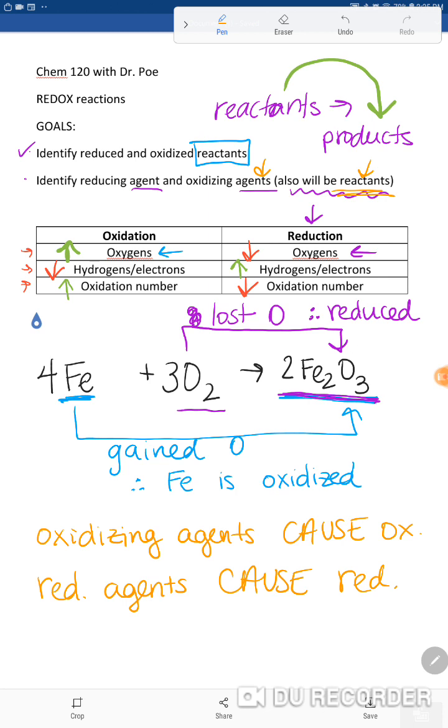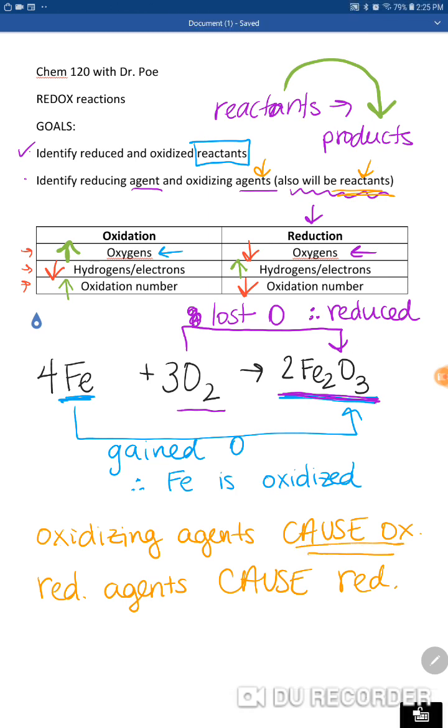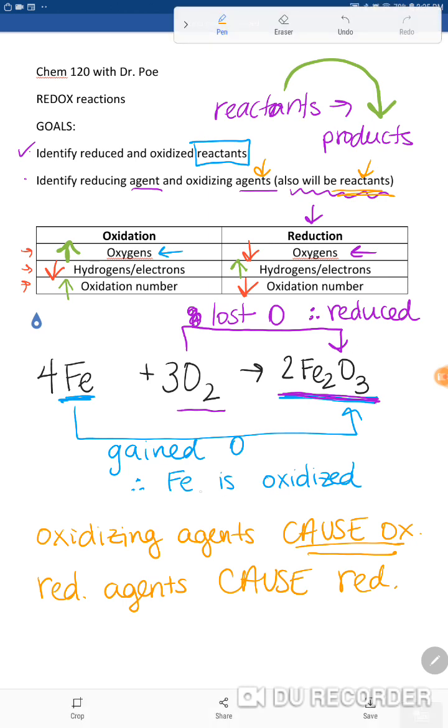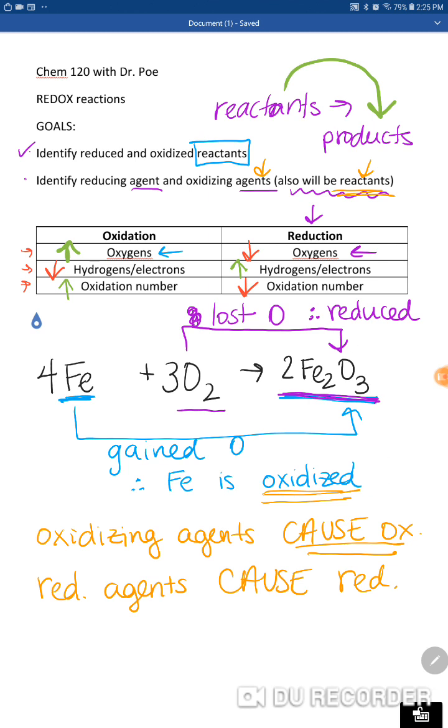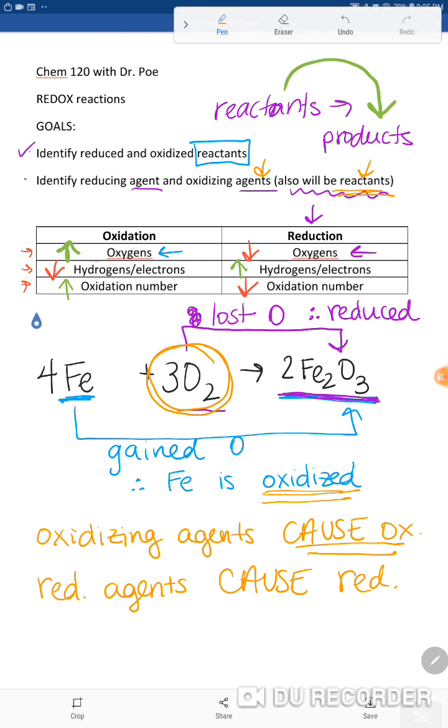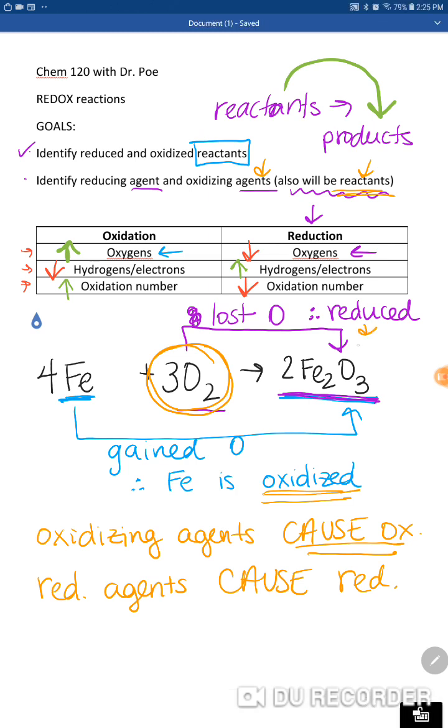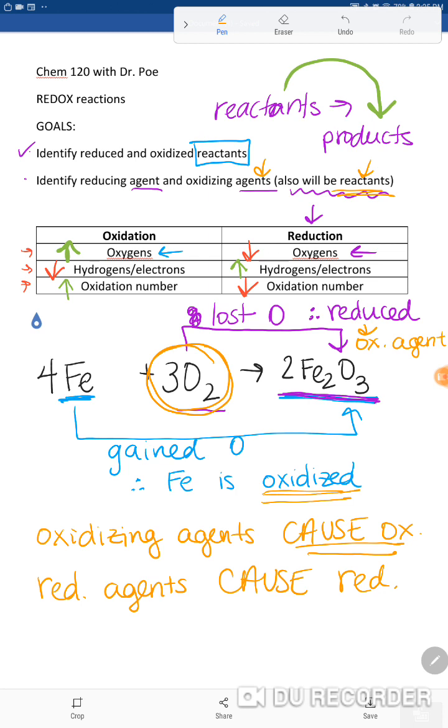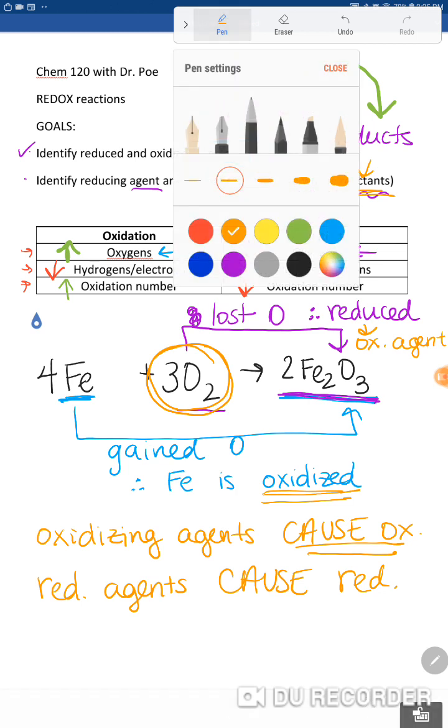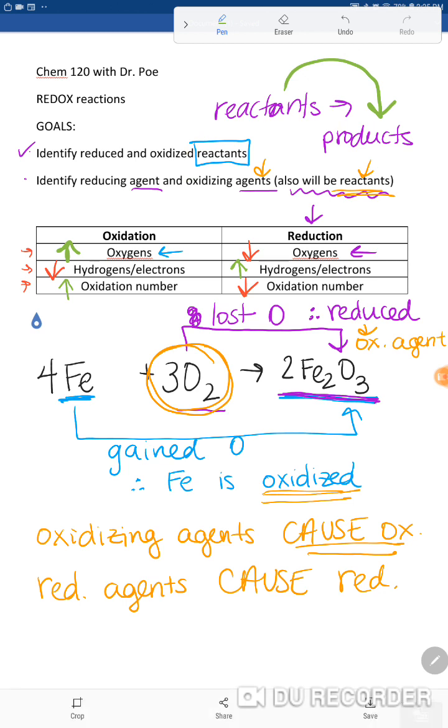Okie dokie. So our oxidizing agents cause oxidation. We know that iron is oxidized, so that means that this oxygen is causing the iron to become oxidized. Therefore the oxidizing agent is reduced—it causes oxidation. Oxygen is the oxidizing agent. A lot of times oxidizing agents have oxygens in them or they are oxygen, oxygen gas for example.